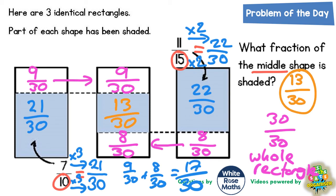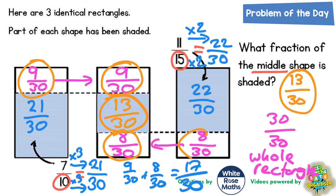This question is almost like a jigsaw puzzle where each bit of the shape is like a missing piece. The more pieces you fill in by writing on the diagram, the more obvious it becomes what you've got to do to find the actual piece you want — which is the bit in the middle. We couldn't have found thirteen thirtieths until we got the nine thirtieths at the top and the eight thirtieths at the bottom. We couldn't have got the nine thirtieths until we worked out twenty-one thirtieths, and we couldn't have got the eight thirtieths until we worked out twenty-two thirtieths. Every time we put another piece of the jigsaw in, it led on to filling in the next piece.